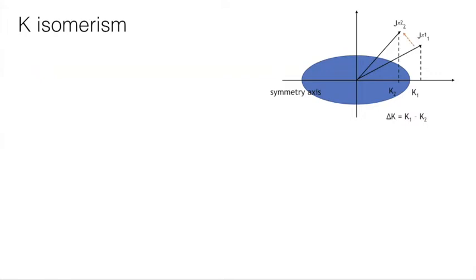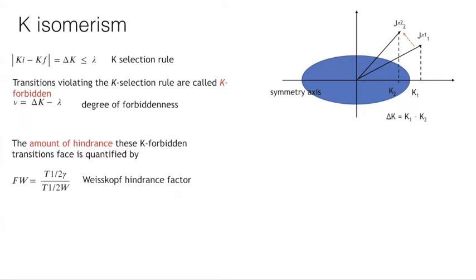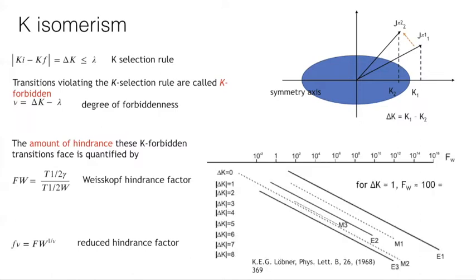In the de-excitation process, when there is a change in ΔK, we have K-isomers. There is a selection rule: the change ΔK must be less than or equal to the multipole order of the transition. If the transition violates this K selection rule, we call them K-hindered or forbidden transitions. The degree of forbiddenness is ν, and the hindrance is usually measured by the ratio of the measured lifetime to the Weisskopf single-particle estimates. Another important quantity used in hindrance analysis is based on the Löbner systematics, which claims that if there is a change in K by one unit, the hindrance increases by a factor of 100.